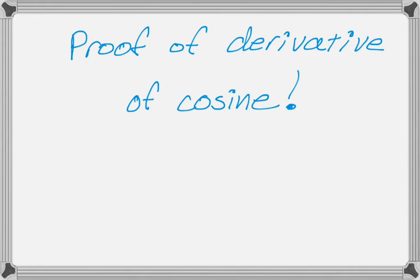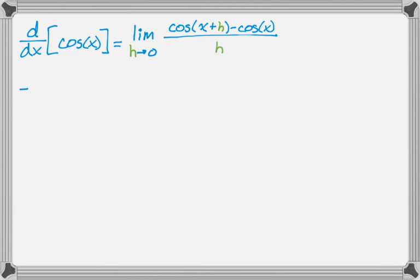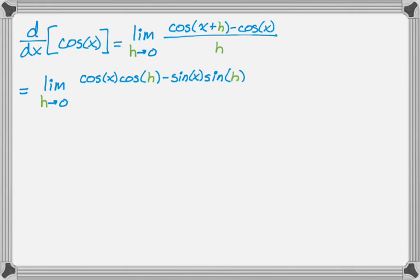Let's do the proof of the derivative of cosine — it's almost exactly the same thing. We start off with the limit definition: the limit as h approaches 0 of cosine of x plus h minus cosine of x, all over h. Using the sum formula for cosine of x plus h gives us cosine x cosine h minus sine x sine h, and then minus cosine of x, all over h.